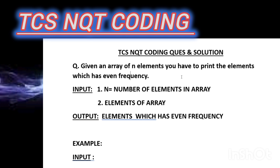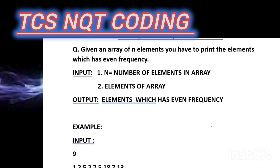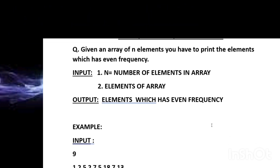The input will first have N — the number of elements in the array — and then from the next line the elements of the array will be given. The output will be the elements which have even frequency.